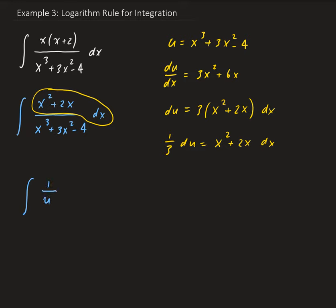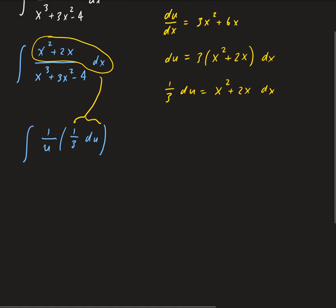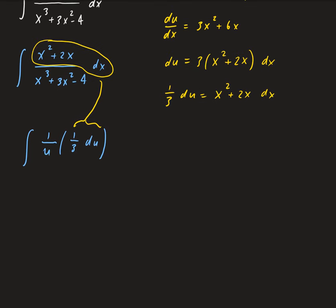So we have the integral of 1 over u times (1/3)du. We can go ahead and take out the 1/3, giving us (1/3) times the integral of 1 over u du. The integral of 1 over u is natural log of u.